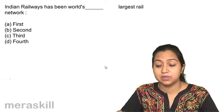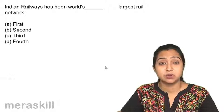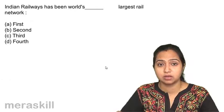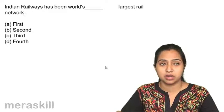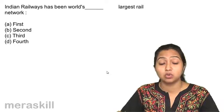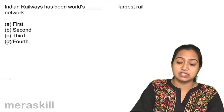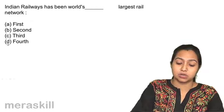Indian Railways has been world's dash largest rail network. First, second, third, fourth. Which one? Fourth largest rail network. Where do we come first? Indian Road Network is the largest in the world. Indian Railways stands fourth. Fourth largest network we have in the world.